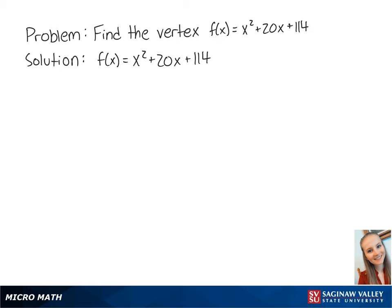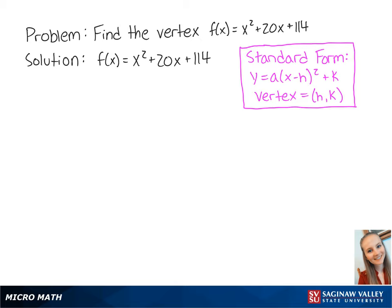To find the vertex, we want to put the equation into standard form by completing the square. To complete the square, we take the coefficient of x and multiply it by 1/2. So we get 1/2 times 20 equals 10.